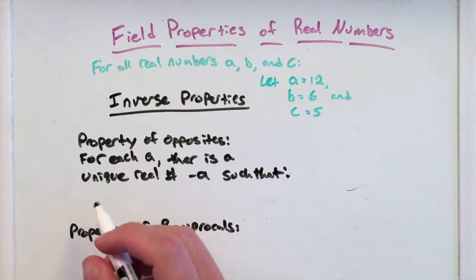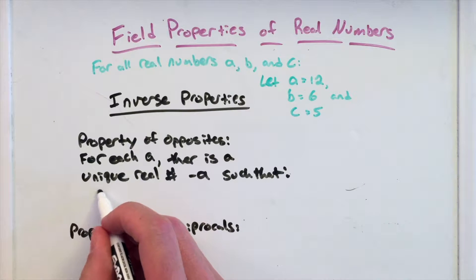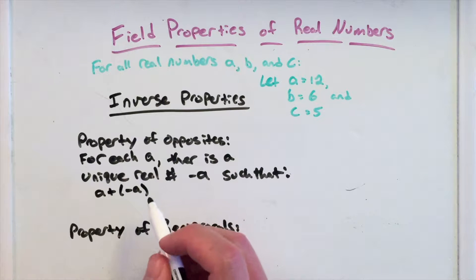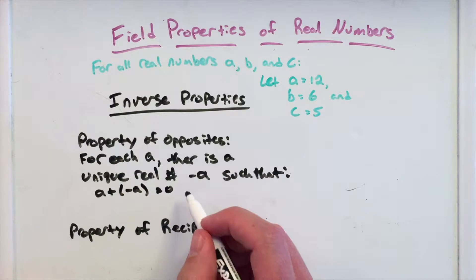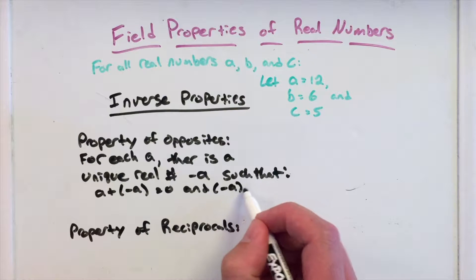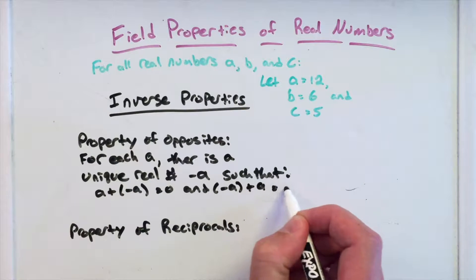Such that A plus its opposite, negative A, equals 0, and negative A plus A equals 0.